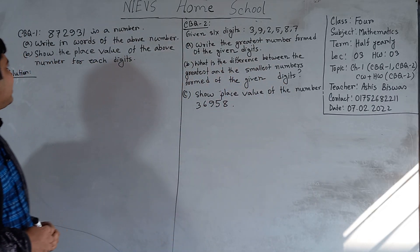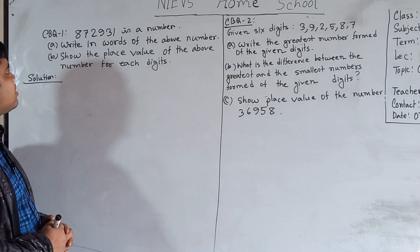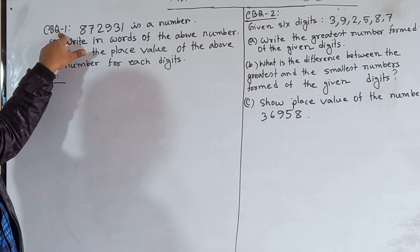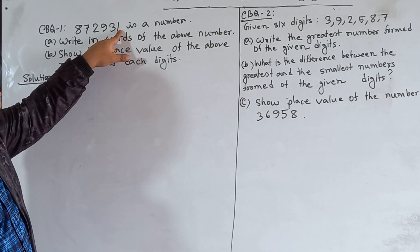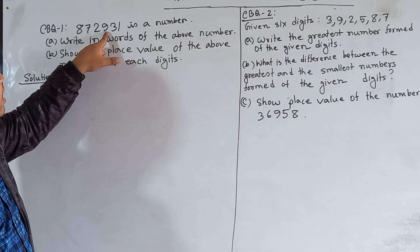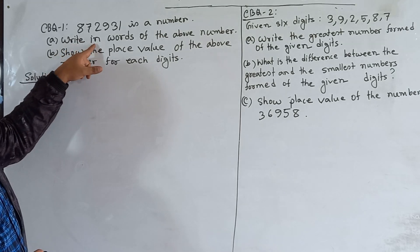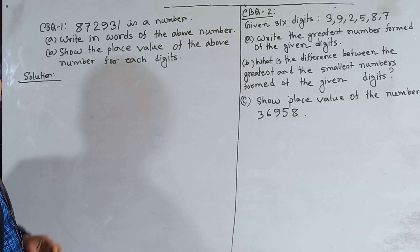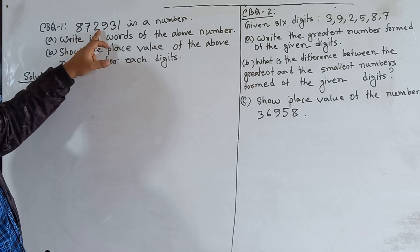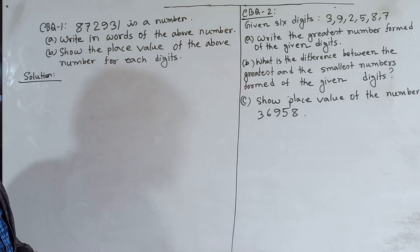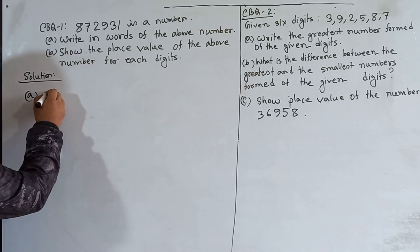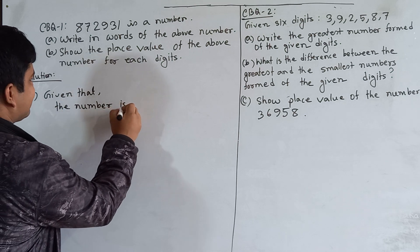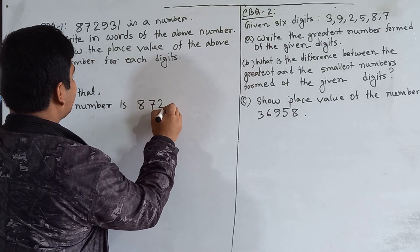I have already written CBQ number 1 and 2 on the board. At first, we shall solve CBQ number 1. In order to solve CBQ number 1, first of all we read the question. The number given is 872931. Question A: write in words the above number. Question B: show the place value of the number for each digit. So first of all, we write this number in words, and then we show the place value for each digit.